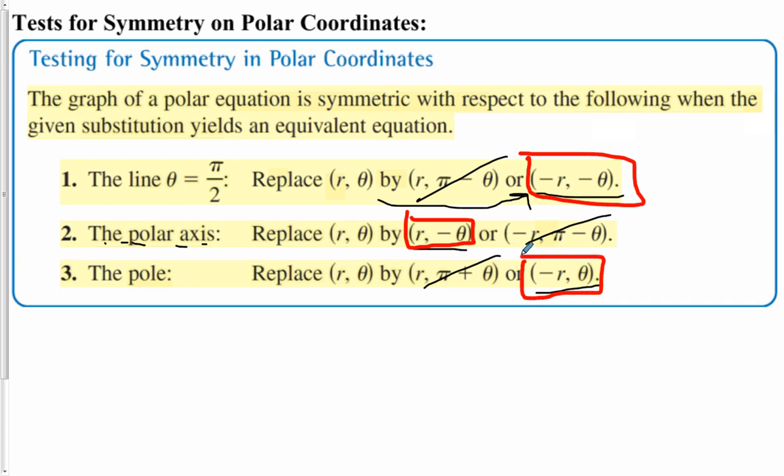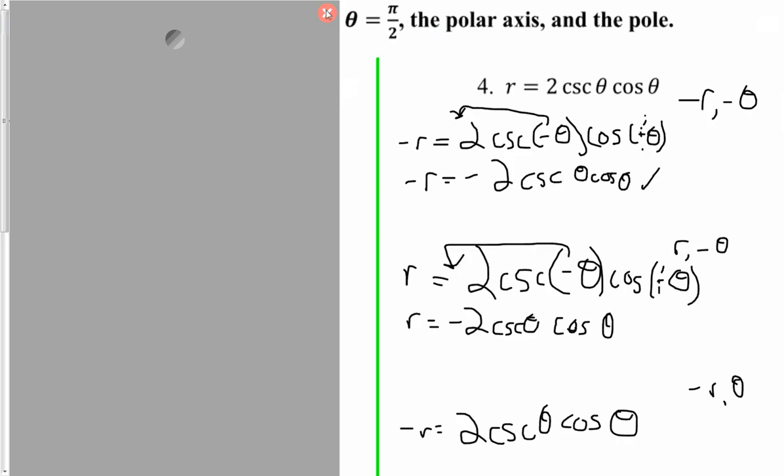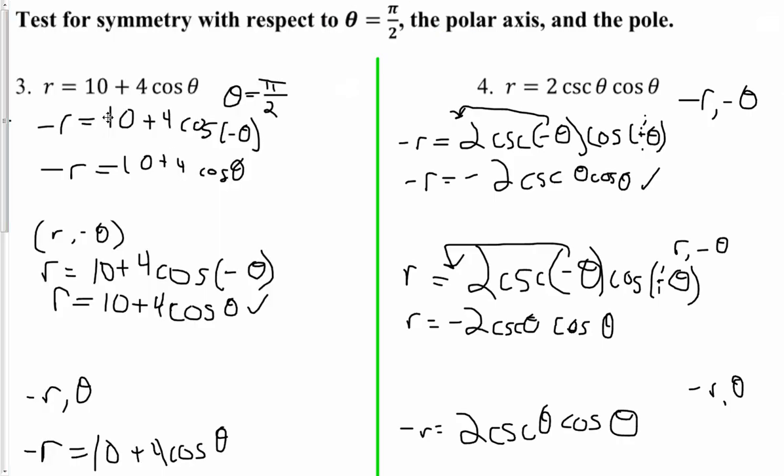And again, basically think about it. What could we substitute for r theta? Well, one's negative, one's positive. Those are these two options, or both negative. So we cover all three options. If we were symmetric about the pole, this is the equivalent of the origin. Basically, you just flip your r value. And so looking at these equations, okay? I did the math already, right? If we were symmetric here, we'd plug in negative for both. So negative r, negative theta. Cosine of negative theta, the negative sign is eaten. So I basically cross this out, and we get negative r equals 10 plus 4 cosine of theta. That does not match, right, because of the minus r. So if that's the case, we are not symmetric, right, if there's no match.